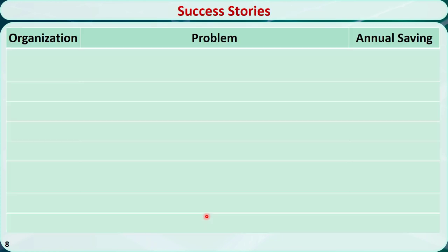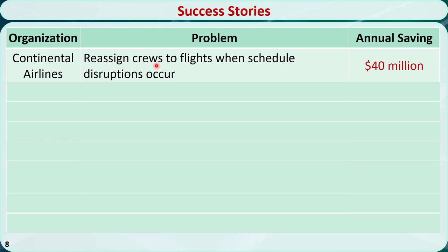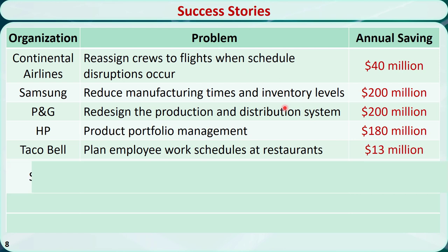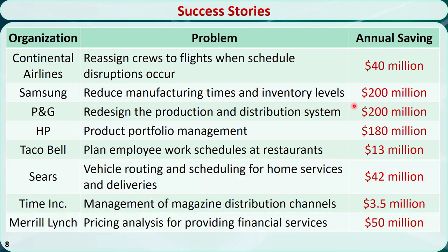Here is a list of success stories and typical applications of operations research in various industries. For example, Continental Airlines used operations research to reassign crews to flights when schedule disruptions occur, leading to an actual saving of $40 million. Samsung Electronics used operations research to reduce manufacturing times and inventory levels, resulting in $200 million more revenue. Such financial incentives are the main reason that operations research is gaining wide popularity in both academia and industry.